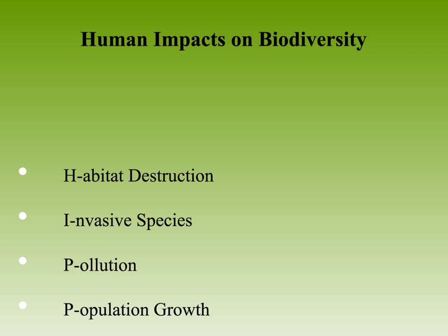The five global mass extinctions: your textbook wants you to know that five have happened, shown in this chart, but we're in the middle of the sixth one right now. Scientists believe we have something to do with it — that's what's so special about this mass extinction. It's caused by us. Human activities lead to a decrease in biodiversity, and when you decrease biodiversity you increase the chances of things going extinct, because if things change, species can't adapt when there aren't enough members.